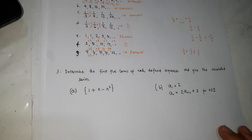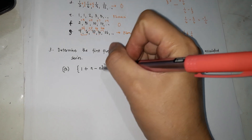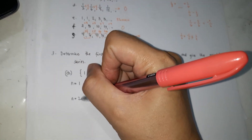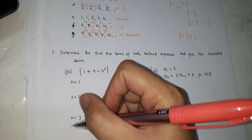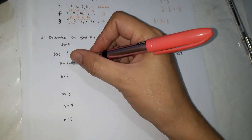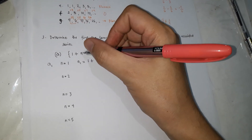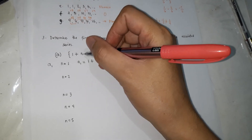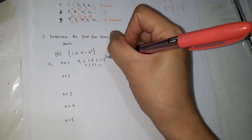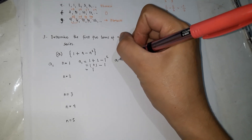Now we're going to determine the first 5 terms of each defined sequence and give the associated series. Here n stands for the term number: n=1 for the first term, n=2 for the second, and so on. The formula is an = 1 + n − n². For a1, substituting n=1: 1 plus (1 minus 1²) = 1 plus 0 = 1. So a1 is 1. For a2, n=2: 1 plus (2 minus 4) = 1 plus (−2) which is... wait, 1 plus 2 minus 4 = 3 minus 4 = negative 1. So a2 is negative 1.